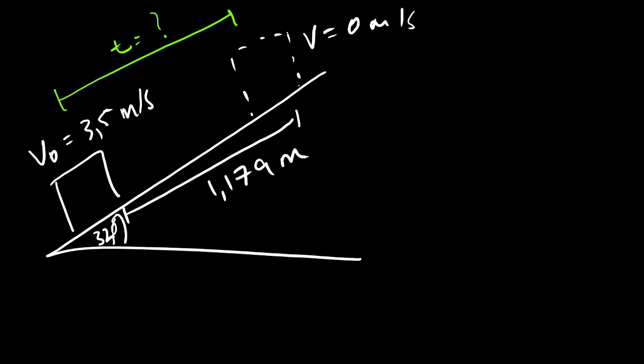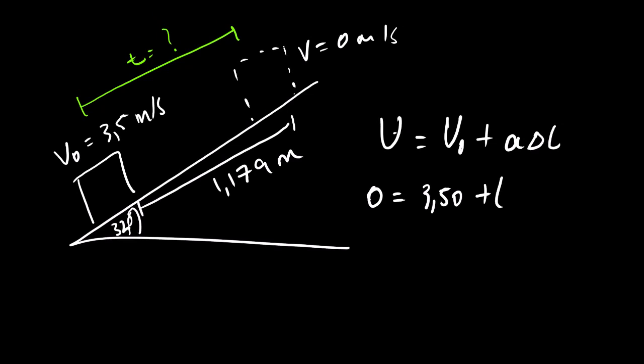So this is the updated scenario with all the data. Remember we calculated the displacement. So we can use equations of motions again. We can choose any equation that has what we have and what we are looking for. So the equation is this one. We can use this equation to calculate time. Our final velocity is 0 equals to initial, it's 3.50. Remember that deceleration is negative 5.193, and then we have time. So it's negative 3.50 equals to negative 5.193 T.